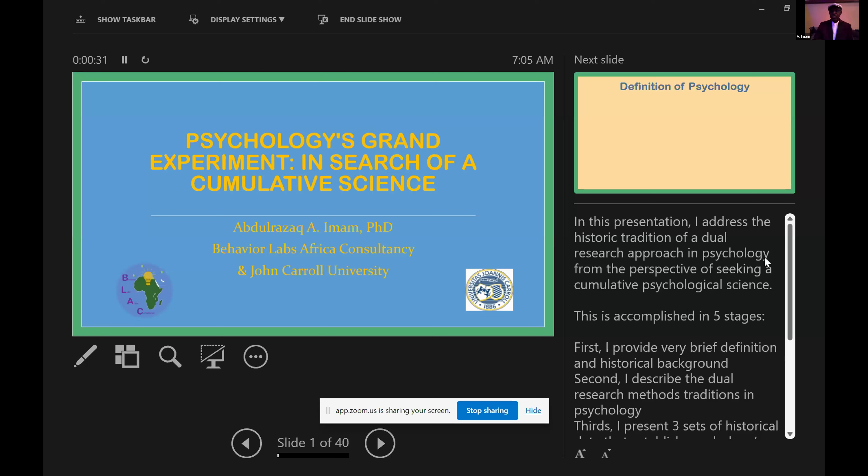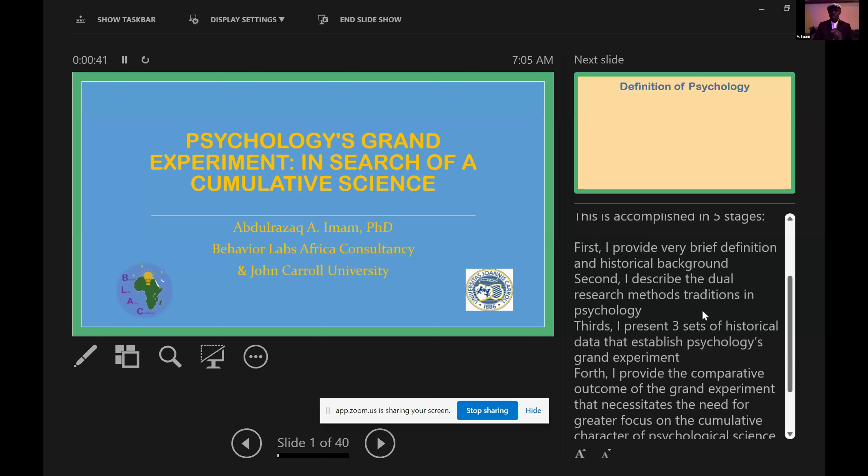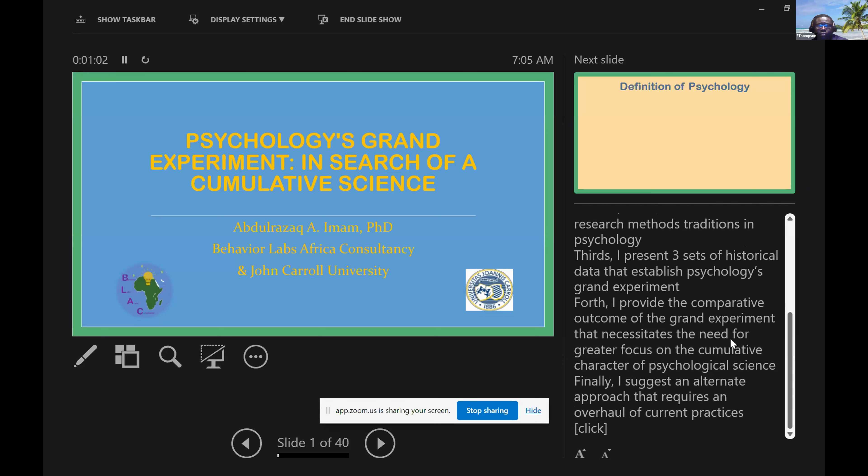I hope to accomplish this in five stages. First, I briefly define and provide a historical background, then describe the dual research methods tradition in psychology, followed by a presentation of three sets of historical data that established psychology's grand experiment. Then I'll provide a comparative outcome of the grand experiment that necessitates the need for greater focus on the cumulative character of psychological science, and finally provide an alternative approach that requires an overhaul of our current practices.